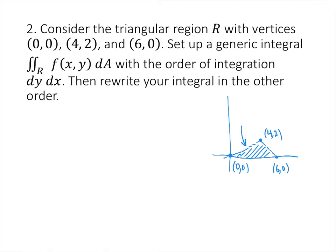Using our regular method of finding the slope and equation of a line, we can figure out that one equation is y equals one-half x, and the other line is y equals 6 minus x. The bottom, if we need it, is the x-axis, y equals 0. If we want to slice this vertically with the order dy dx, we're going to get two different kinds of vertical slices: one with y equals one-half x on top, and then at x equals 4, the slicing changes so that y equals 6 minus x is on top with the x-axis on the bottom.